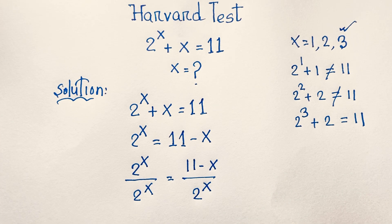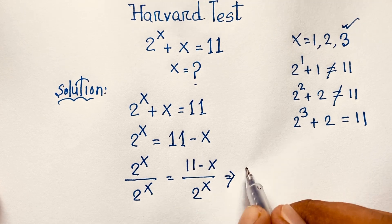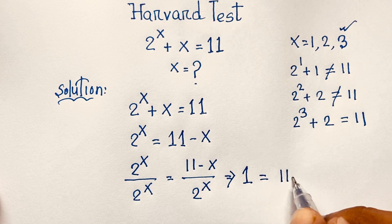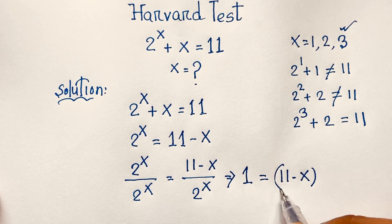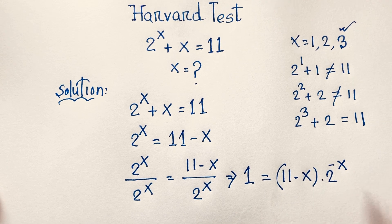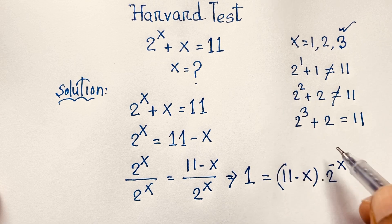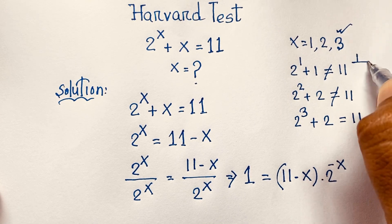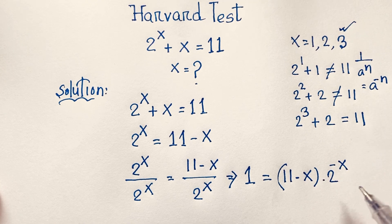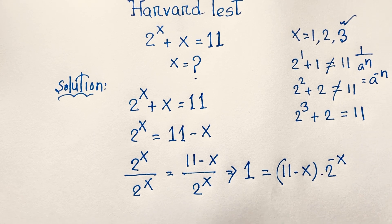Dividing 2^x by 2^x gives 1. And (11 minus x) over 2^x becomes (11 minus x) times 2 to the power of negative x. According to the exponential formula, we know that 1 over a to the power of n equals a to the power of minus n. So 1 over 2^x equals 2 to the power of negative x.